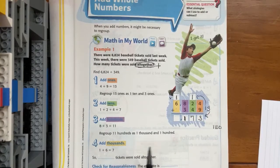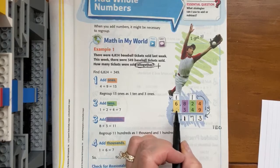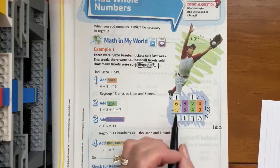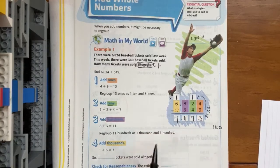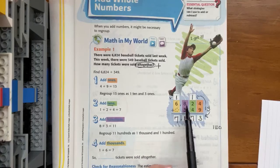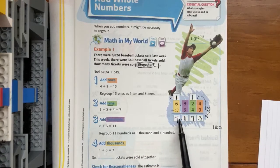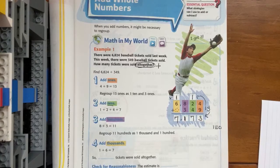Then our last step tells us to add the thousands. We don't have any here. So six plus one is seven thousand. So 6,824 plus 349 is 7,173.